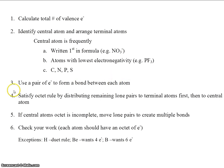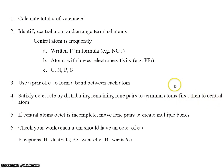Step 4: satisfy the octet rule by distributing remaining lone pairs to terminal atoms first, then to the central atom. Step 5: if the central atom's octet is incomplete, move a lone pair to create multiple bonds.